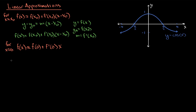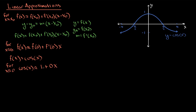Let's do that. We let f of x equal cosine of x, and we want a linear approximation for x values near 0. So cosine of x is approximately cosine of 0 — which is 1 — plus the derivative of cosine, negative sine of x, evaluated at 0, which is 0. So our linear approximation of cosine of x for x values near 0 is the line y equals 1.